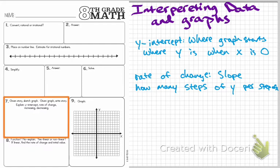Our second key vocabulary term is the rate of change, which is the slope on our graph. We can define that as how many steps of y per one step of x. Finally, we're asked to describe whether or not the graph is increasing or decreasing, and maybe it does both of those things, or maybe it stays the same.